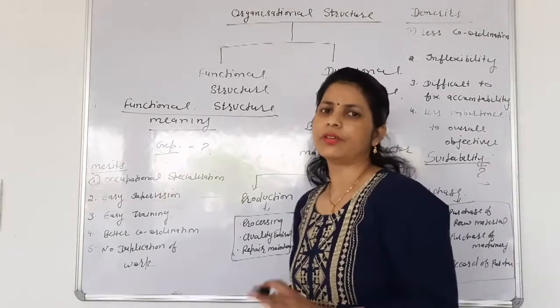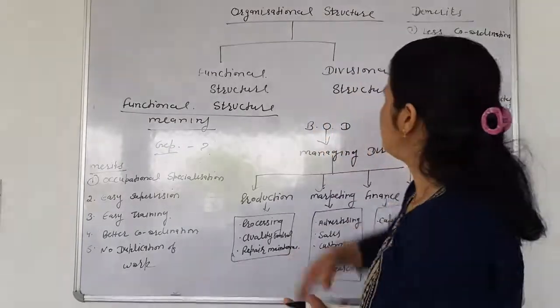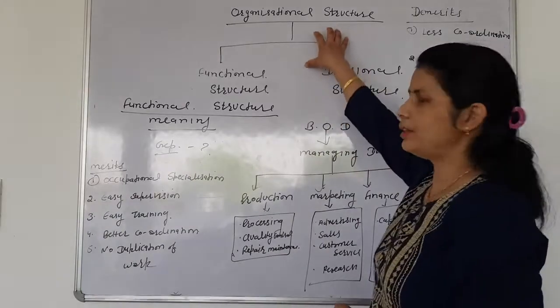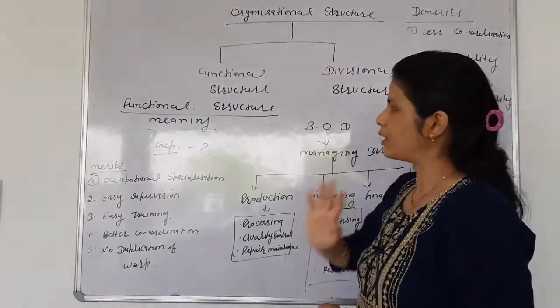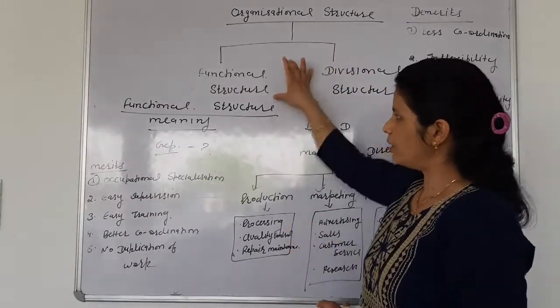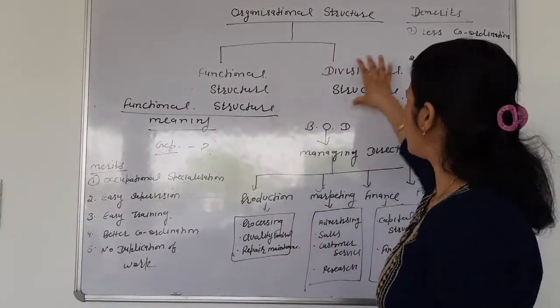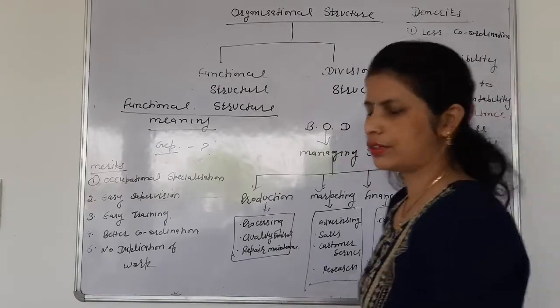Let's start. Our topic is continuous. Organizational structure has two types: functional structure and digital structure.